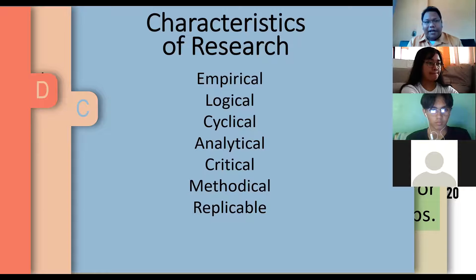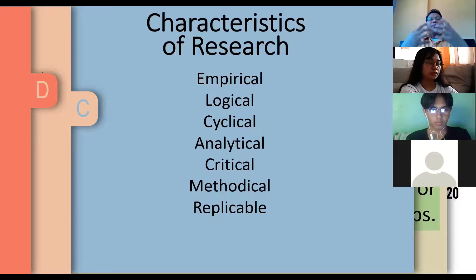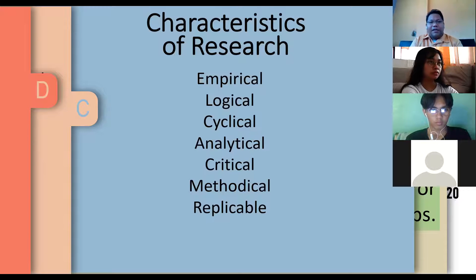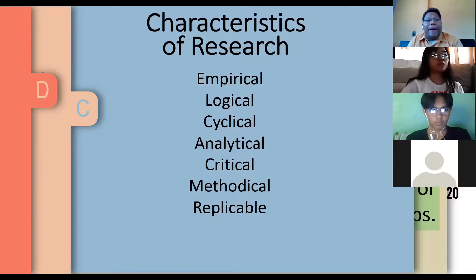Next characteristic of research — it is critical. In the same way that research is described as a careful investigation, you need to remember it's a critical undertaking. As a critical undertaking, there needs to be precise judgment developed by the researcher. Next, research is also methodical — from the word method. The word method suggests that there is a system in research, there are procedures, a series of steps that need to be observed in order to successfully do research. Without following that method, the researcher should not expect to get quality results.